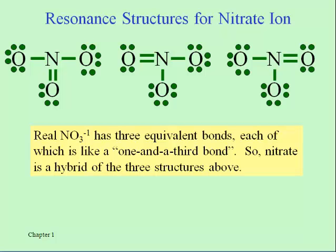This illustrates what I was mentioning in that last video about nitrate having three different structures. The real nitrate is analyzed to have three equal bonds between nitrogen and oxygen, and it's really four electron pairs being shared between nitrogen and three other atoms. So it's like a one and a third bond — you can't draw a one and a third bond, so we just draw these different possibilities with the realization that nitrate is somewhere in the middle.